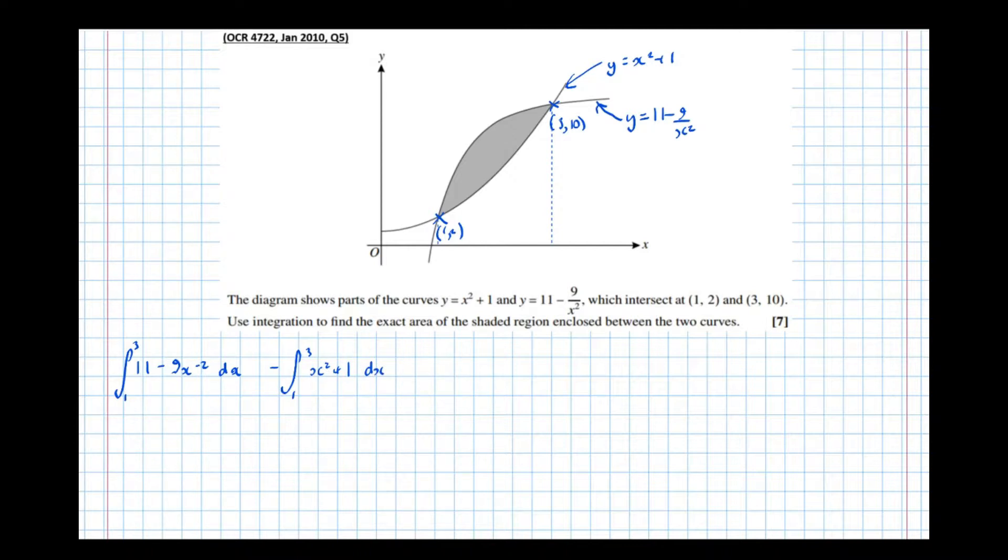However, what we can actually do is speed things up, we can combine these integrals, we can actually do the subtraction within the integral. So the integral between 3 and 1, of 11 minus 9 x to the minus 2, take x squared plus 1 dx.